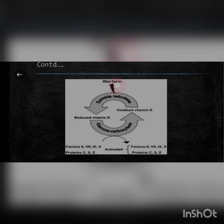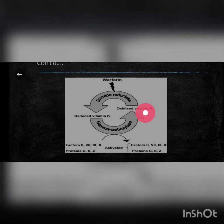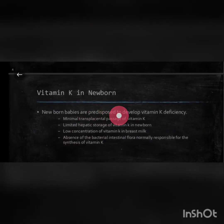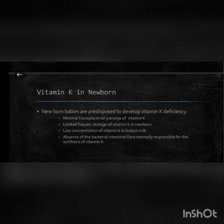Warfarin inhibits the enzyme epoxide reductase, so oxidized vitamin K is not converted to reduced vitamin K, thus preventing coagulation or clotting. So in conditions where we need to reduce clotting in the body, we can prescribe warfarin to inhibit the clotting process. Regarding vitamin K in newborns: newborn babies are predisposed to develop vitamin K deficiency.